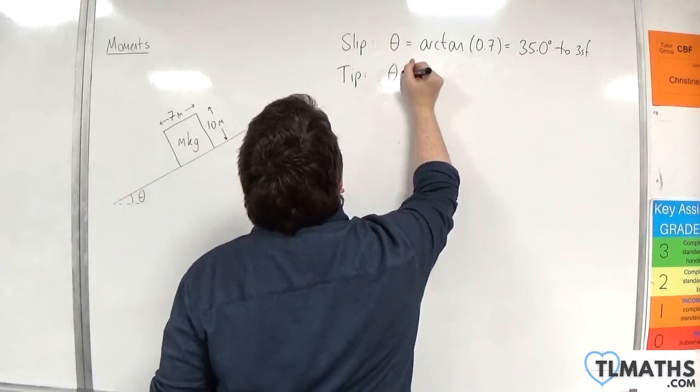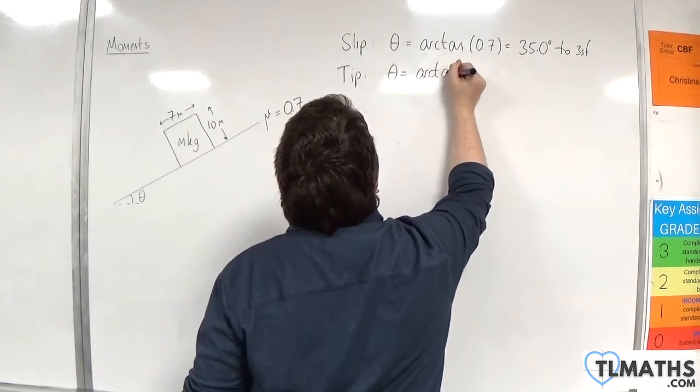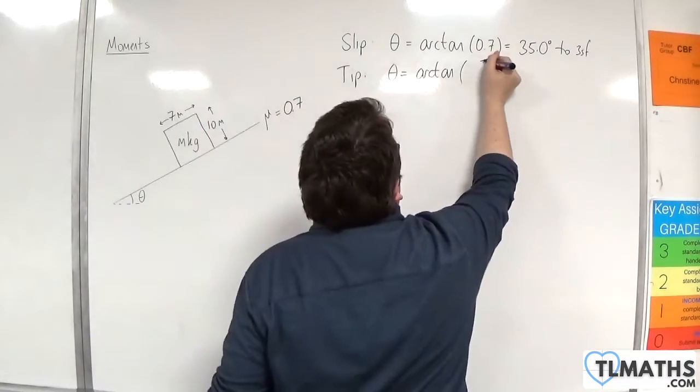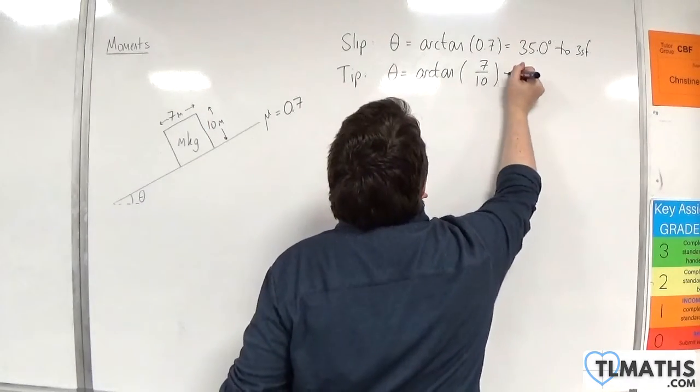It will tip down the slope when the angle is arctan of 7 over 10. Now that's precisely the same as 0.7.